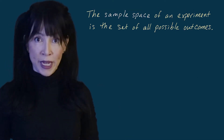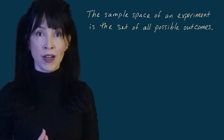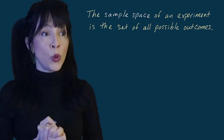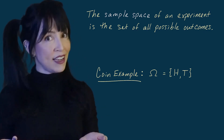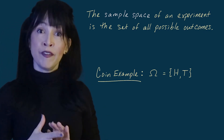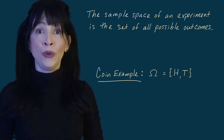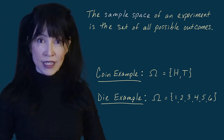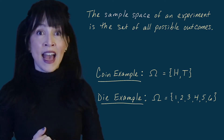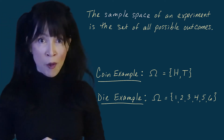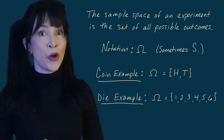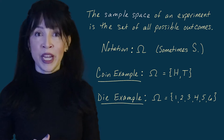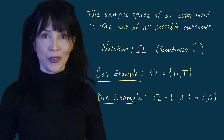The sample space of an experiment consists of all possible outcomes. In the coin flipping experiment, you can get heads or tails. In the rolling a fair six-sided die experiment, you can get one, two, three, four, five, or six. I'm using curly braces as set notation, and I'm going to use capital Omega for the sample space — though it's often denoted by a capital S.